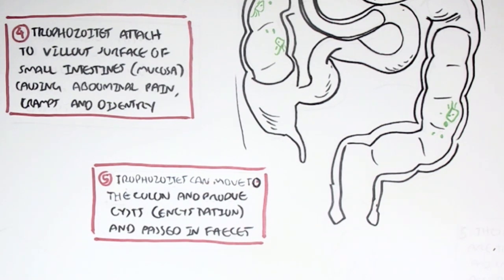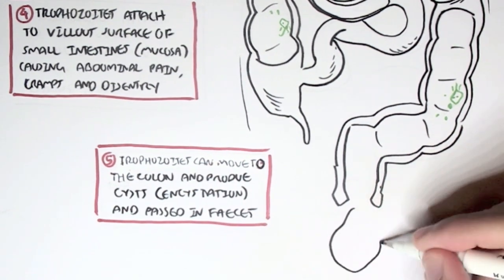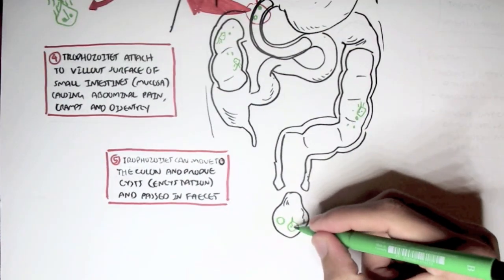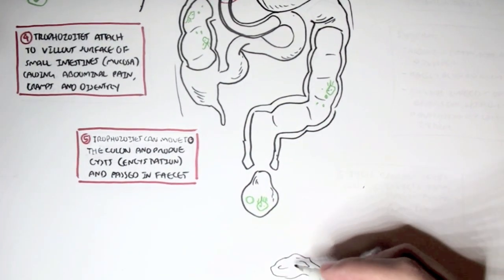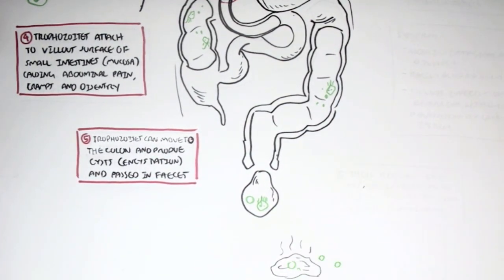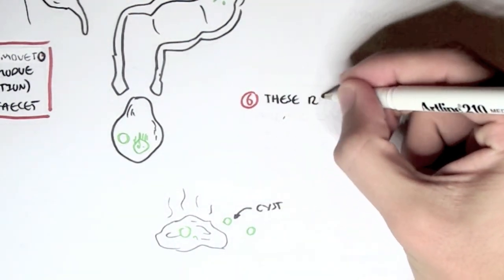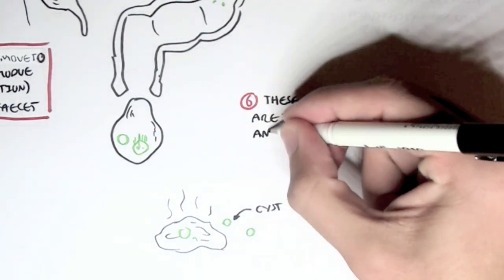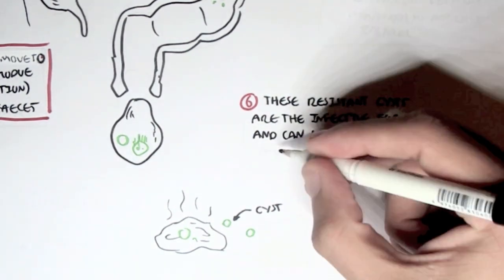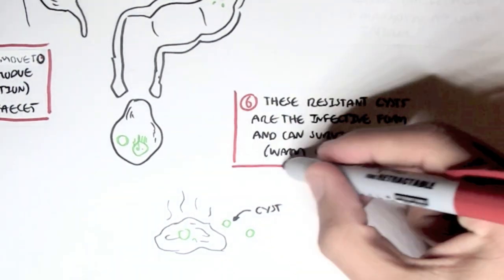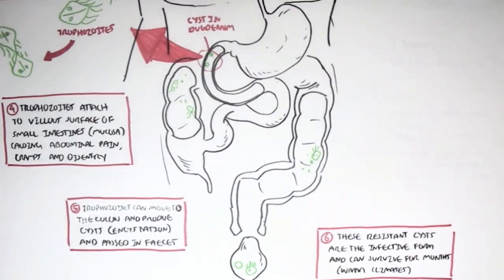Now, the cysts can be passed in feces, and the trophozoite can be passed in feces as well. Now these cysts are very resistant and are the infective form, remember, and can survive for many months in warm climates. And this is why these are an issue in developing countries, because most developing countries have a particularly warm climate.